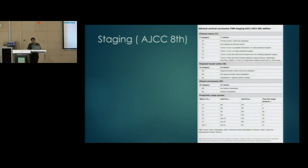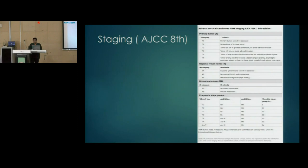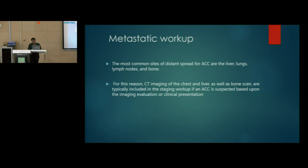Regarding staging of adrenocortical carcinoma per AJCC 8th edition: T1 is less than 5 cm, T2 is more than 5 cm, T3 involves local invasion without invading adjacent organs (fat invasion only), and T4 invades adjacent organs or large blood vessels. N1 is regional lymph node metastasis and M1 is distant metastasis. Stage 1 is T1N0M0, Stage 2 is T2N0M0, Stage 3 includes nodal positivity or local extension, and Stage 4 is metastatic disease. Common distant metastasis sites include lung, liver, lymph nodes, and bones.